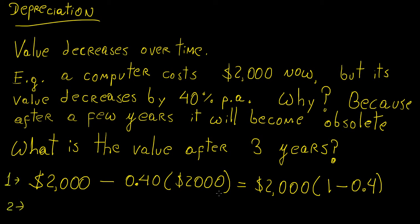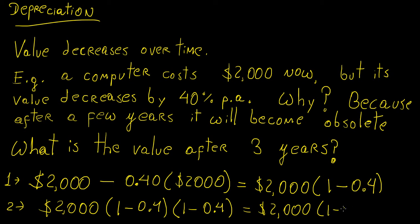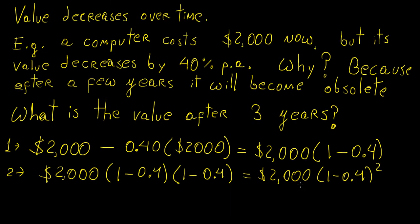After two years, what's going to happen is we're going to grab this new value. So that's 1 minus 0.4. We're going to multiply once again by 1 minus 0.4 because we're decreasing it by 40% once again. So we can rewrite this as 2,000, 1 minus 0.4 squared. And you can imagine that if you continue this pattern after, say, n number of years, you can predict that based on this rate of depreciation, you're going to get the following case. So you're going to have $2,000 times 1 minus 0.4 raised to the power of n.